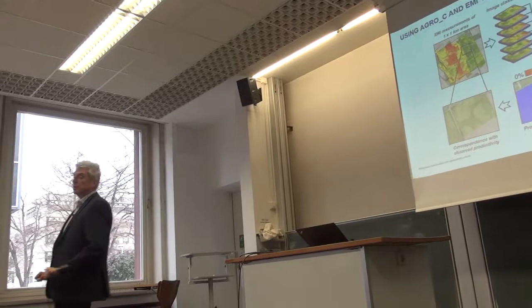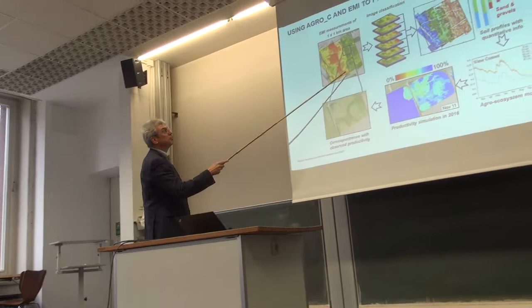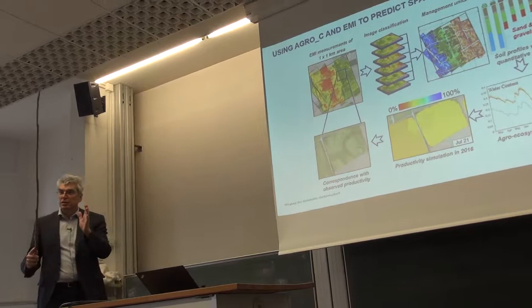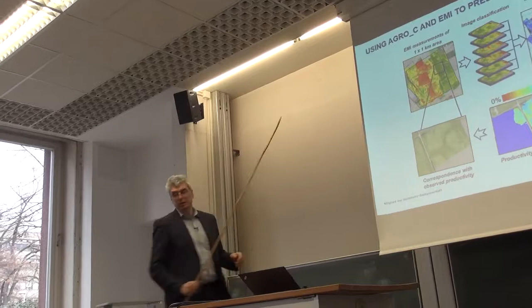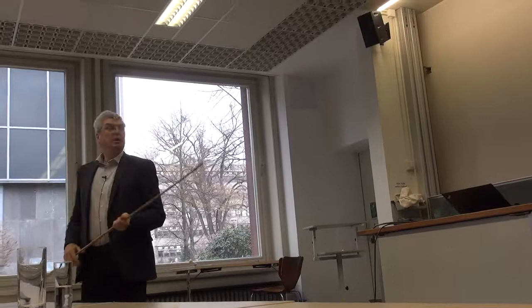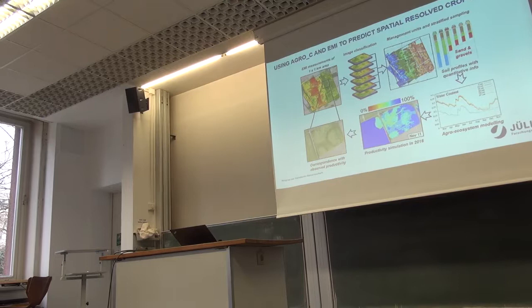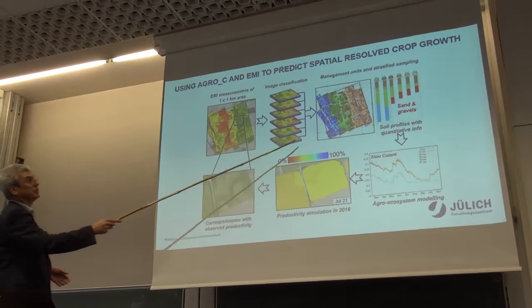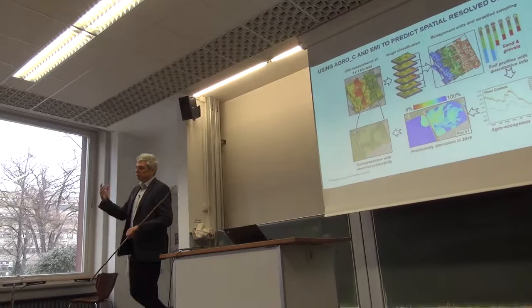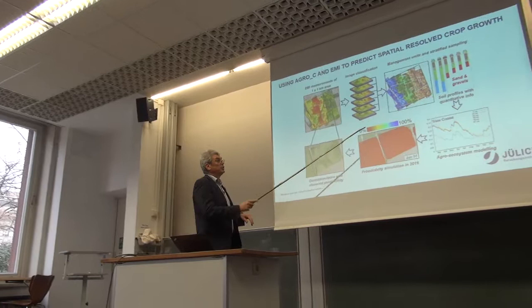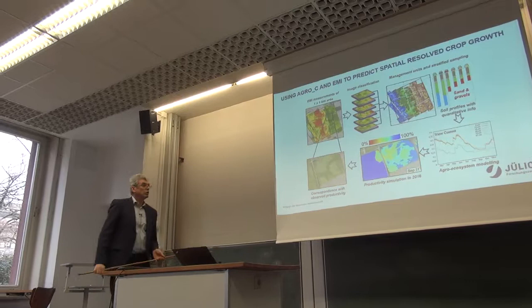We also used this model to look at spatial variability in crop production. A map made by electromagnetic induction — a geophysical method at the 1 by 1 kilometer scale — measures electrical conductivity. We use this information, combined with drilling at specific locations, to create a soil map and then apply AgroSea.